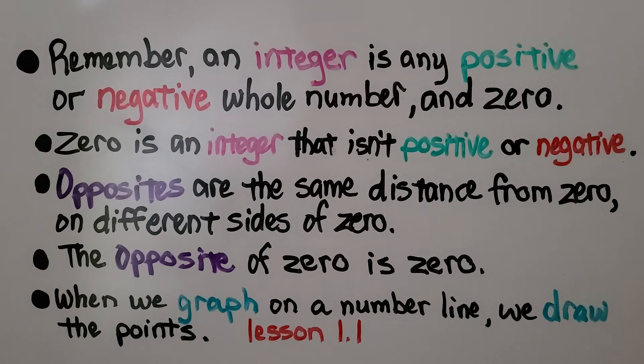So remember, an integer is any positive or negative whole number and zero. Zero is an integer that isn't positive or negative. Opposites are the same distance from zero on different sides of zero, and the opposite of zero is zero.